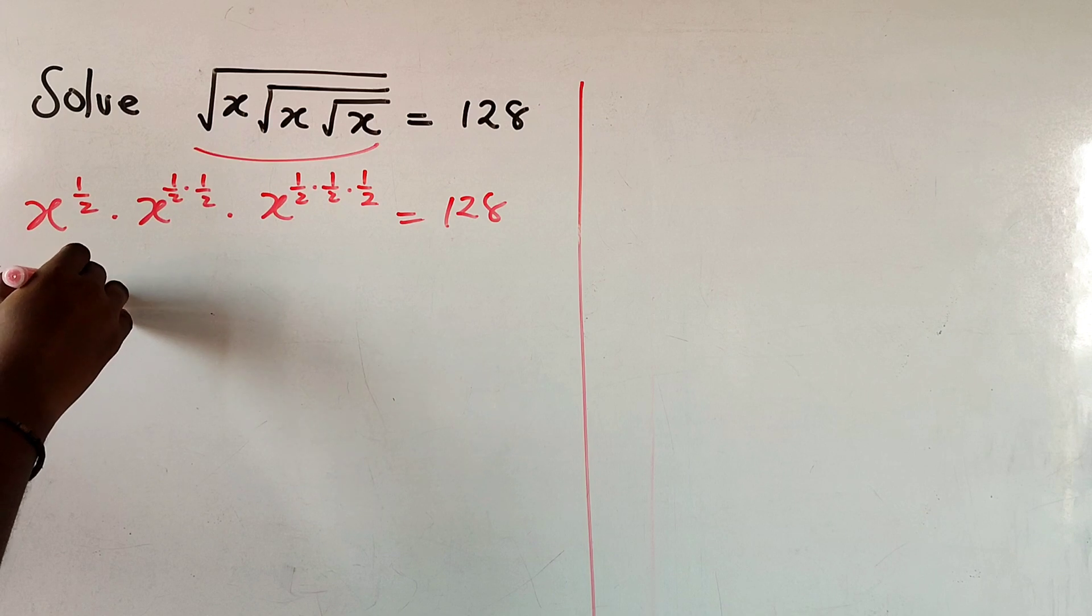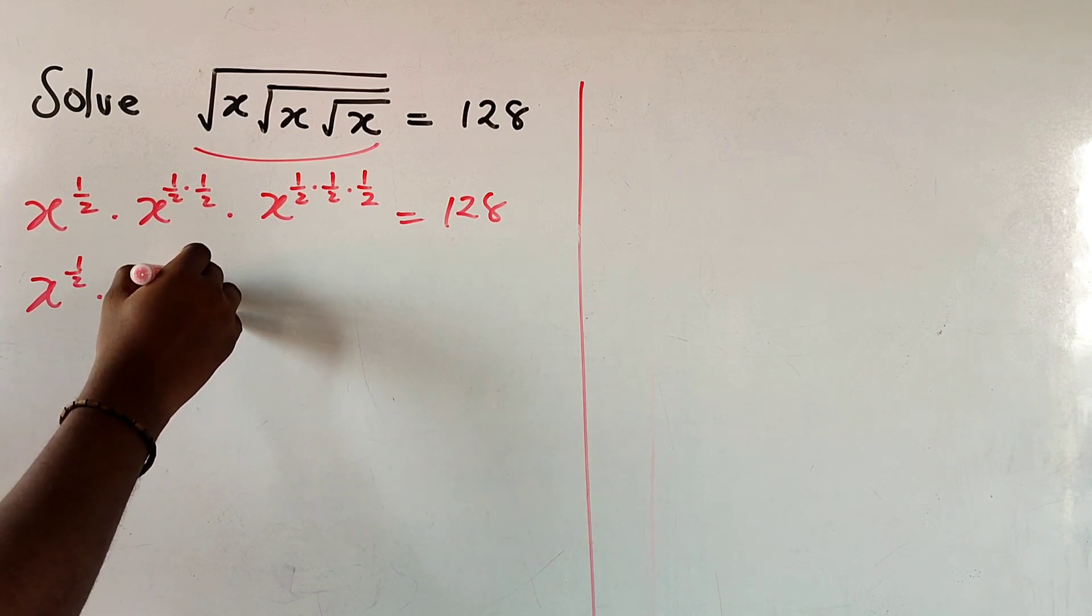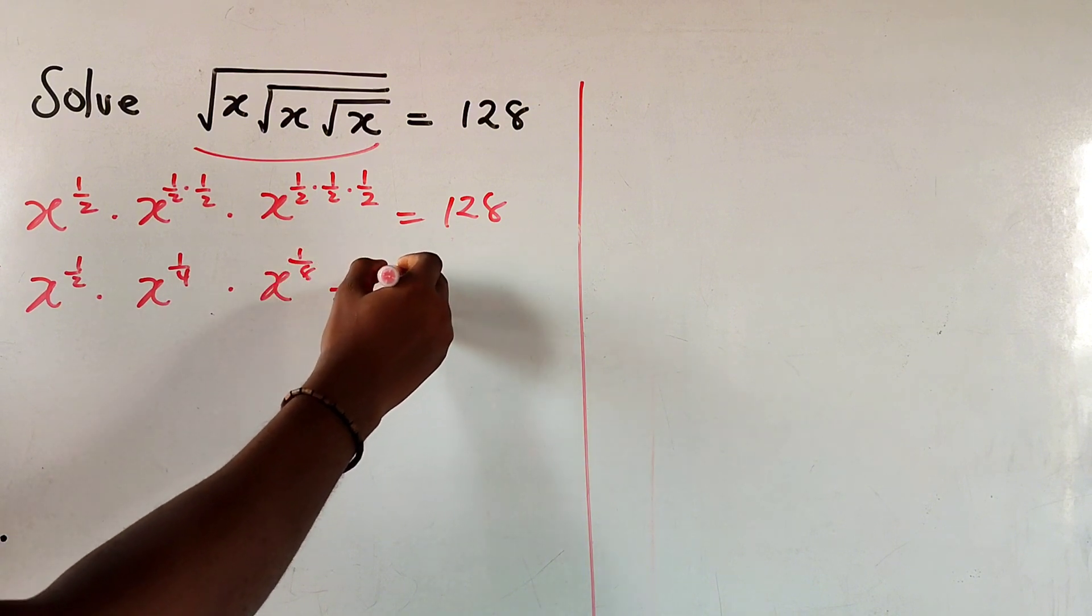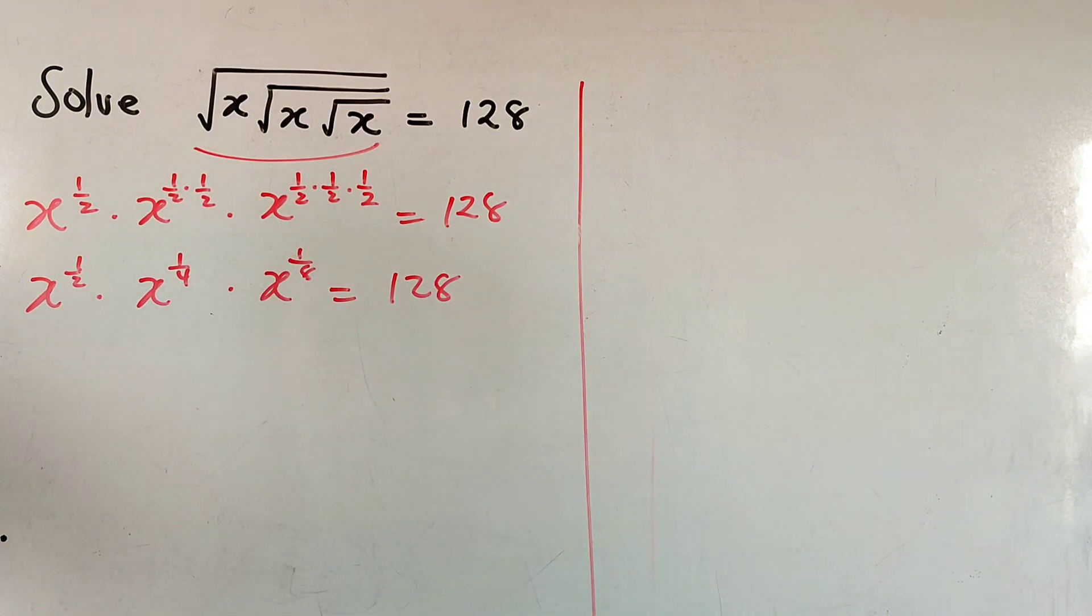Now simplifying that we have x to the power of 1 over 2 times x to the power of 1 over 4, we'll get 1 over 4 here. We're also multiplying 1 over 8 here and we'll have 128 on the right-hand side.